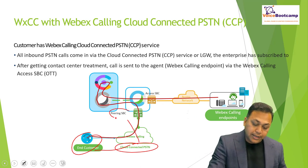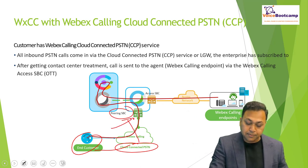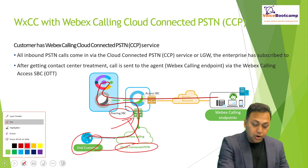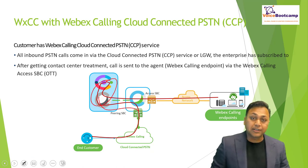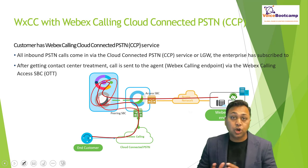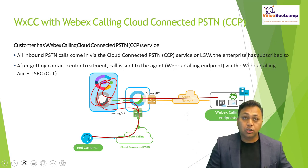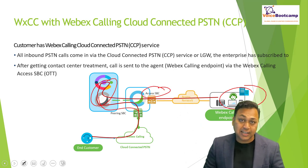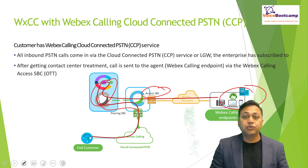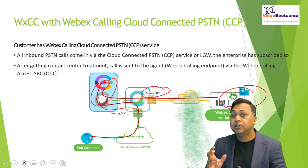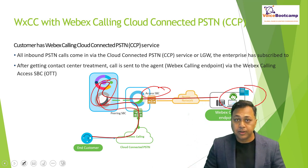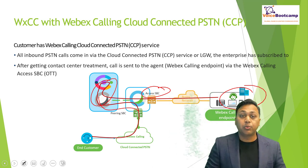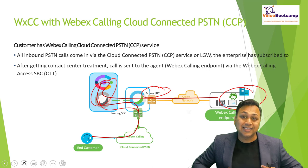There is an important difference here. When the customer call comes in to the cloud connected partner, the cloud connected partner establishes a SIP trunk with what we call the Peering SBC — this is on the WebEx Calling side. The call then comes into WebEx Contact Center and gets processed. When the call goes to an agent registered to WebEx Calling, it uses the Access SBC — not the Peering SBC. Calls from the cloud connected partner hit the Peering SBC; calls going to an agent use the Access SBC.